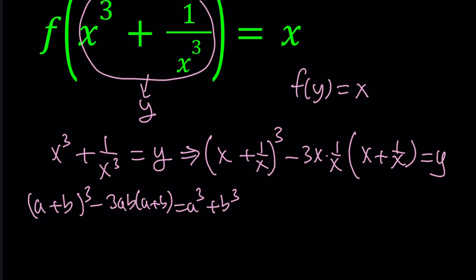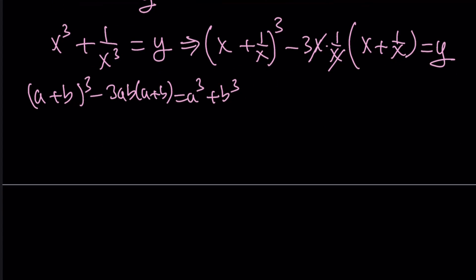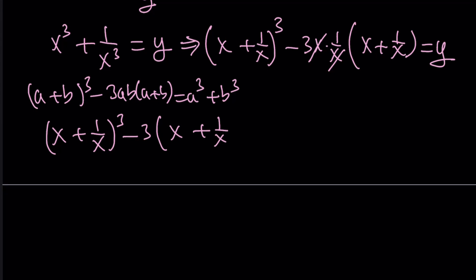So this equals y, and the x cancels out leaving us with 3. Let's write this one more time: x plus 1 over x, all cubed, minus 3 times x plus 1 over x equals y. Now we're going to use substitution a few more times — let's go ahead and replace x plus 1 over x with z.